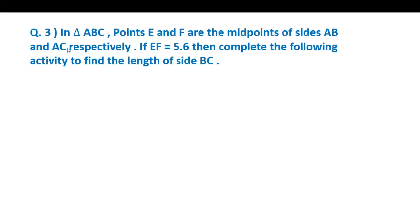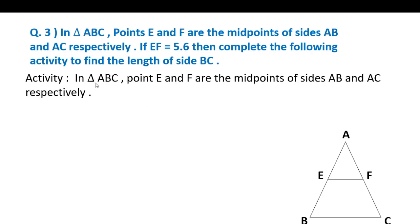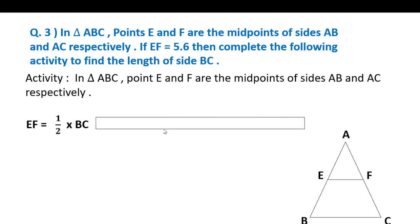Question number 3. In triangle ABC, points E and F are the midpoints of sides AB and AC respectively. Draw the diagram. If EF is equal to 5.6 cm, complete the following activity to find the length of side BC. By the midpoint theorem, EF is equal to half of BC.